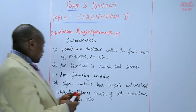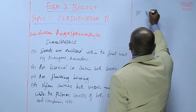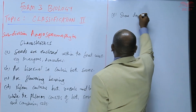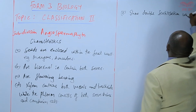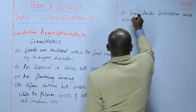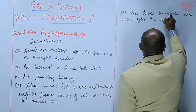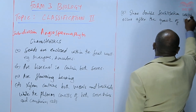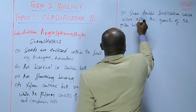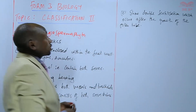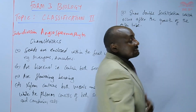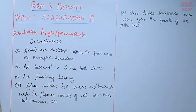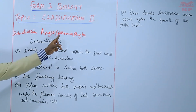The other characteristic is that they show double fertilization. They show double fertilization, which occurs after the growth of the pollen tube. So after pollination there is the growth of the pollen tube, and that pollen tube leads to double fertilization.